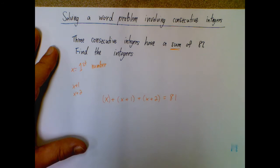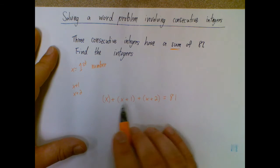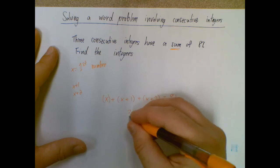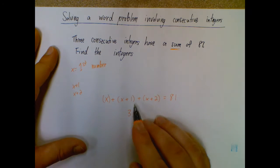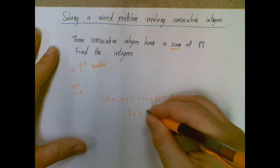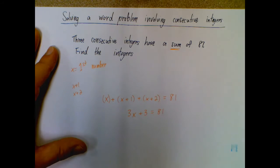After that, I'm just going to start combining some like terms. So x plus x plus x is 3x. 1 plus 2 is 3. Bring down that 81.